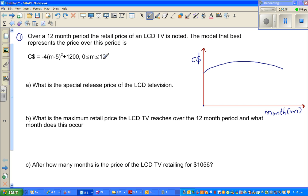C which is the cost in dollars is minus 4 times m minus 5 squared plus 1200, where m is the number of months. You can see the graph here and this is the equation of this graph. So this is a parabola, and this graph is only for a period of 12 months.